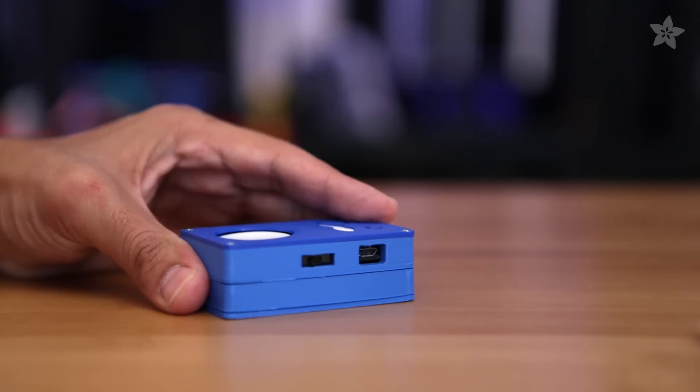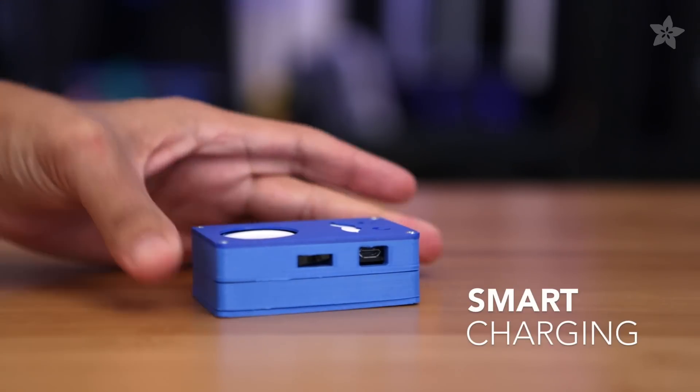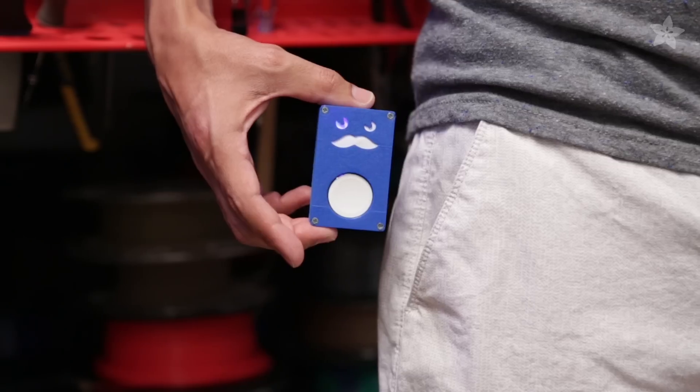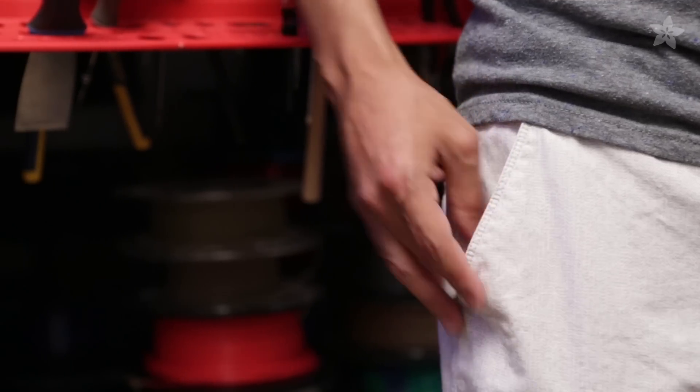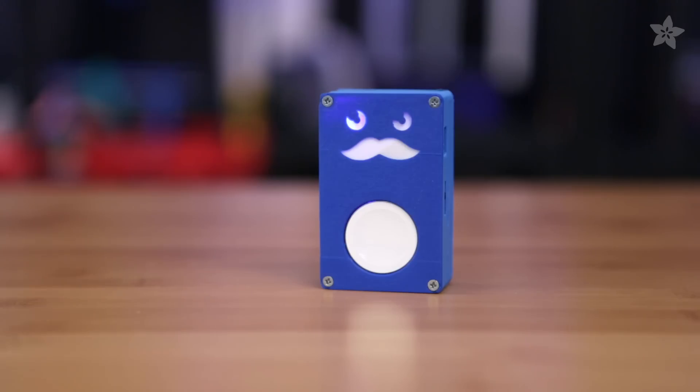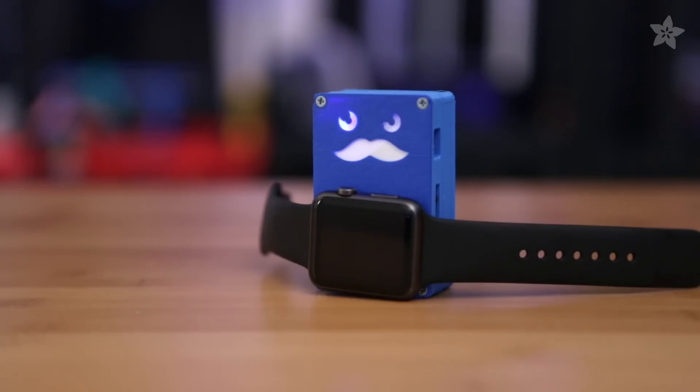The PowerBoost 1000C features smart charging so you can plug it in while you're charging devices and the battery. The slim enclosure makes it nice for traveling and fits really well in your pocket. Thanks so much for watching and be sure to subscribe for more 3D printing and electronic projects from Adafruit.